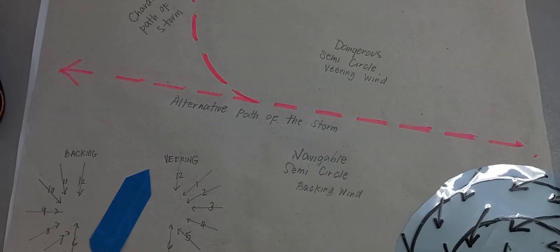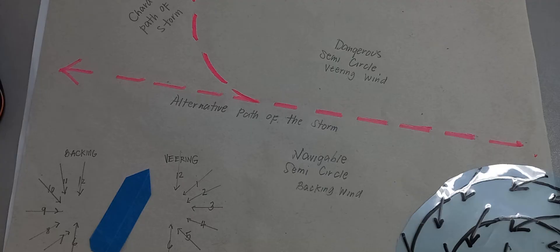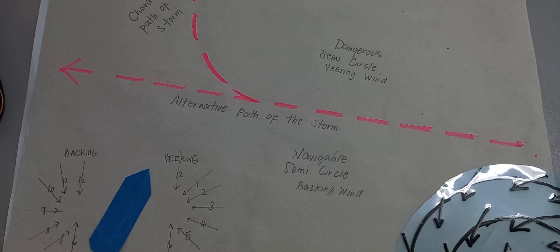This is the action in order for you to get out of the tropical revolving storm. First, you need to identify which semicircle you are in. In the navigable semicircle, you can observe that the wind is backing. And in a dangerous semicircle, you can observe that the wind is veering.